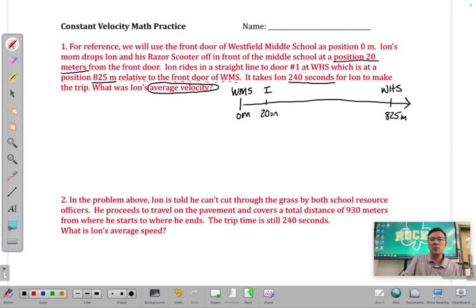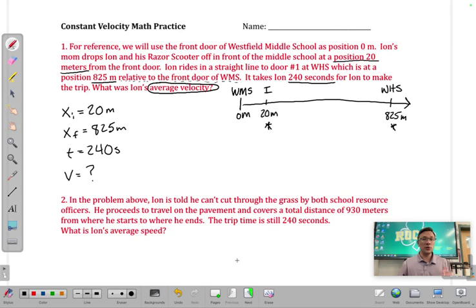So I see 20 meters. That's this right here. So what exactly is that? Well, that's not the distance he traveled and it's not his displacement. But what that is, is where he started at. So that is going to be his initial position. We'll use X sub I for this. You could also use X sub zero or position null. But we'll use initial position here and we're going to write in 20 meters. Now, he ends over here at 825 meters, right? So his final position relative to the front door of the middle school, just like his initial position was relative to the front door of the middle school, is 825 meters. We already talked about the time. That's 240 seconds. And then we are solving for his average velocity. So V.